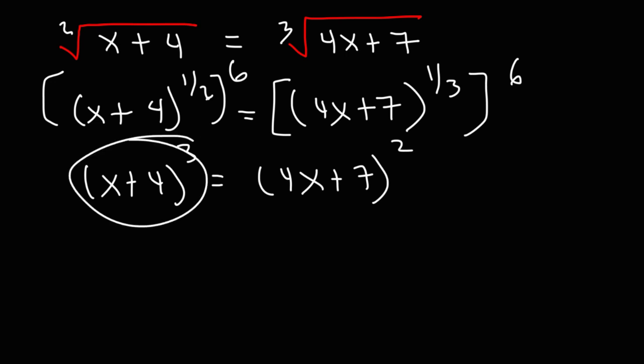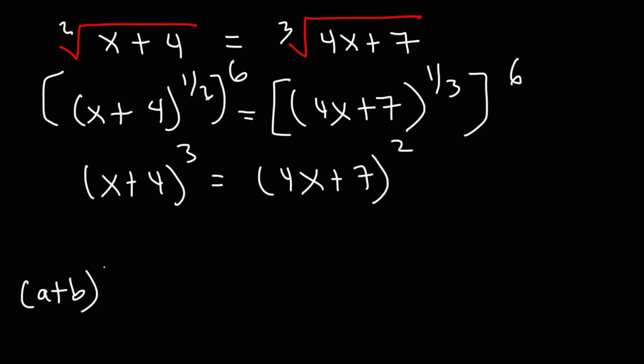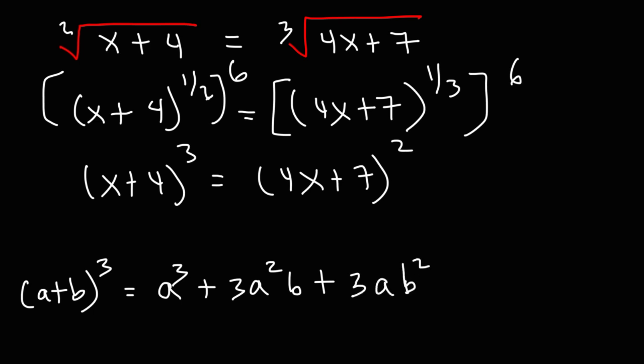Now let's expand the expression x plus 4 raised to the 3rd power. It turns out there is a formula that can help us expand that expression — we don't need to FOIL or use the binomial theorem. Here it is: a plus b raised to the 3rd power is equal to a cubed plus 3a squared times b plus 3ab squared plus b to the 3rd power.